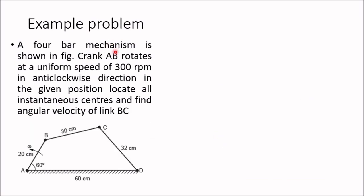One example problem: a four-bar mechanism is shown in the figure. Crank AB rotates at a uniform speed of 300 rpm in the anti-clockwise direction. We need to locate all instantaneous centers and find the angular velocity of link BC. First, we draw the configuration diagram. The largest length is 60 cm and the smallest is 20 cm, so we take a scale of 1:10, making the maximum length 6 cm and the smallest 2 cm.